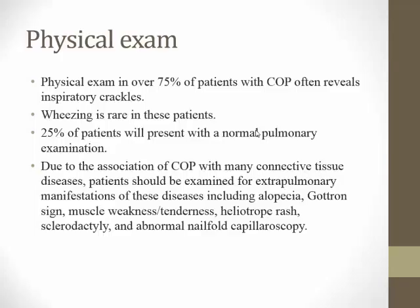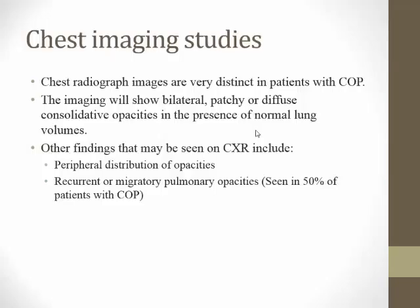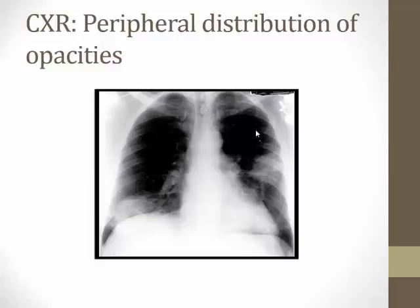On examination, patients may have crackles and rarely wheezing. A good portion will have a normal lung exam. It is important to look for extra-pulmonary manifestations of connective tissue disease. Imaging is important — a chest X-ray is obtained, which typically shows bilateral peripheral opacities. In COP, those lesions can be migratory, meaning the location of opacities may change if the X-ray is repeated.